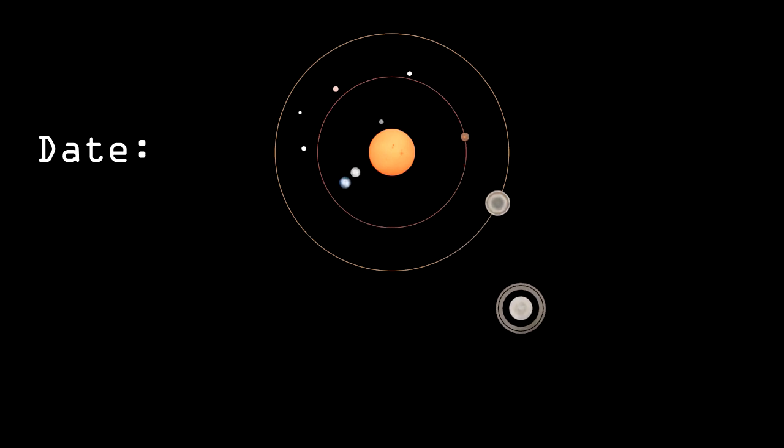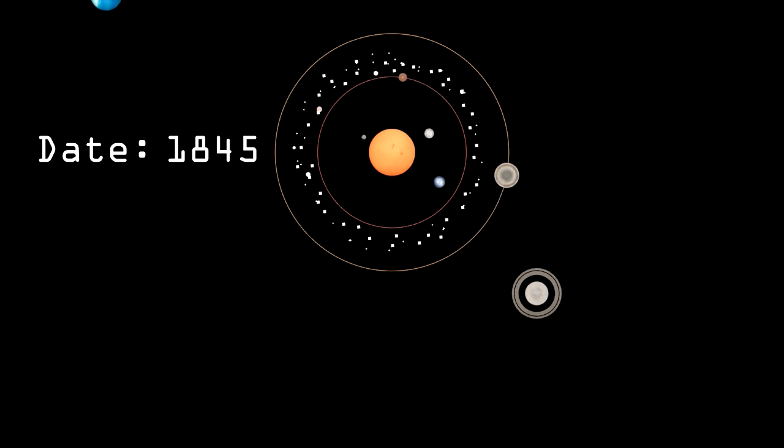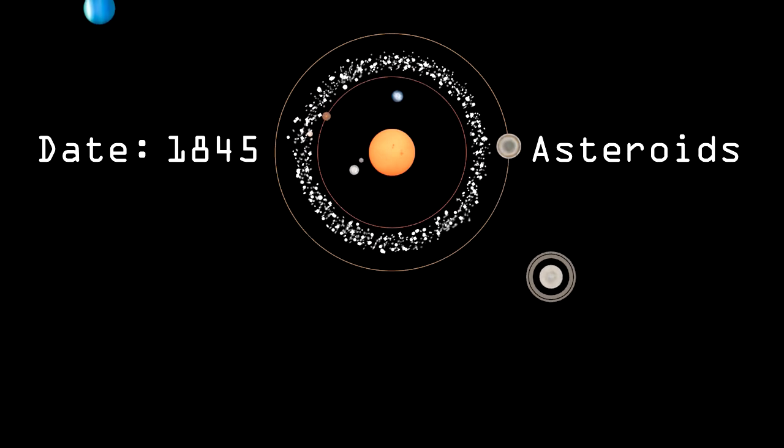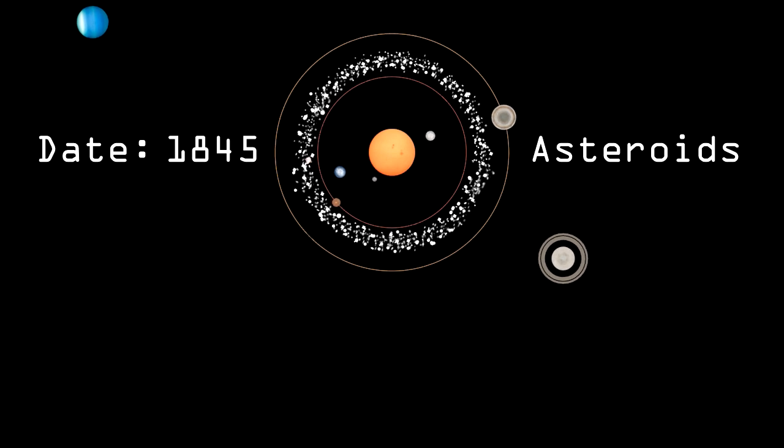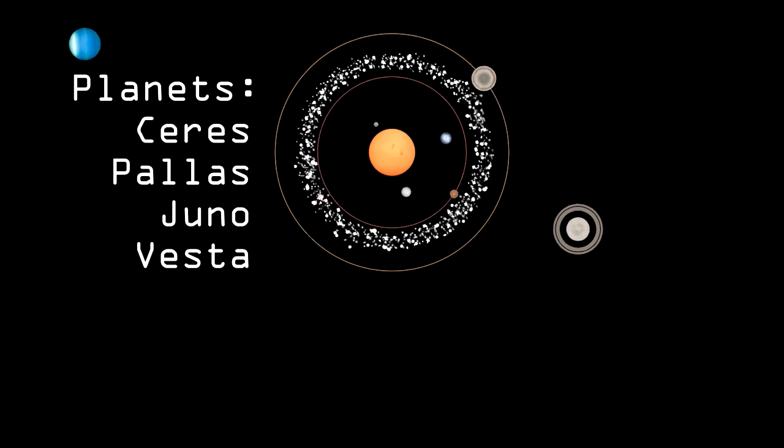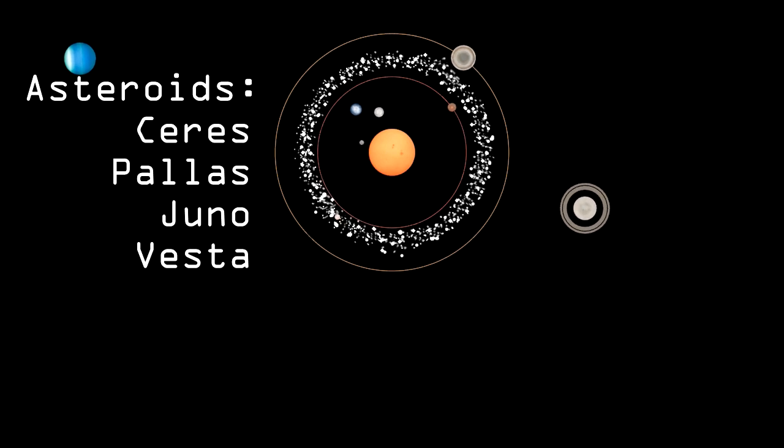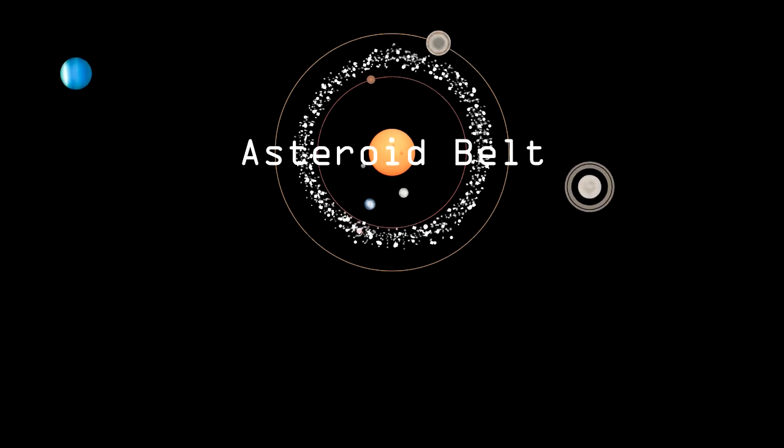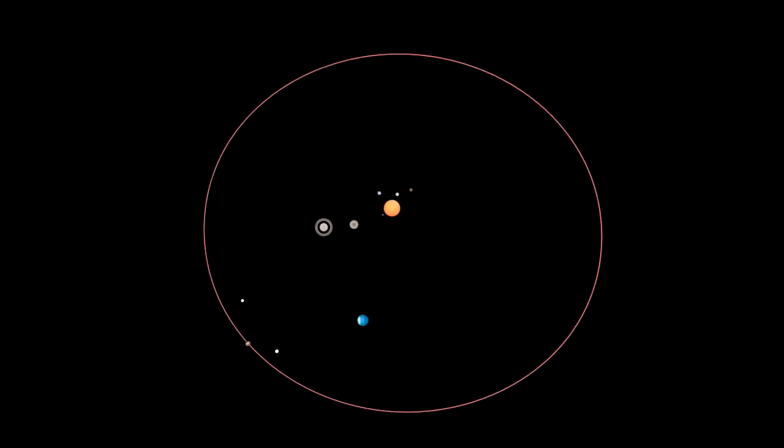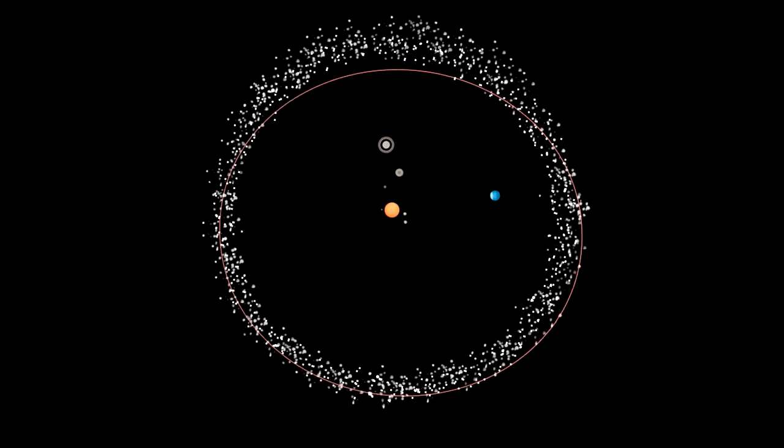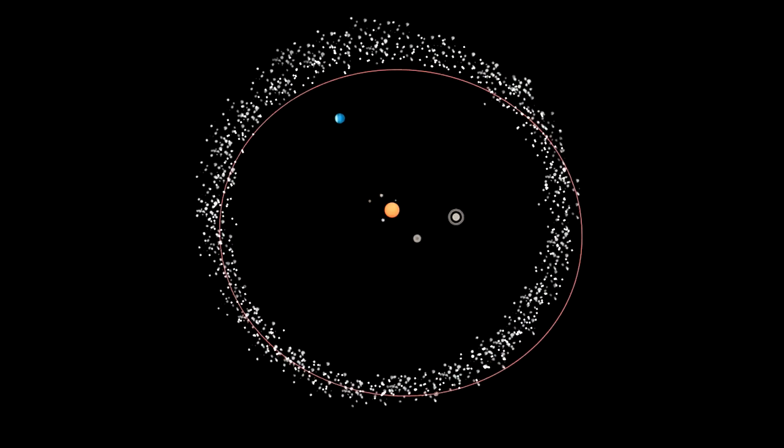But that changed with the discovery after 1845 of many more of what are now called asteroids, also orbiting between Mars and Jupiter. After that, Ceres and the rest were reclassified from planets to asteroids, in what is now called the Asteroid Belt. So, it was natural that many would question whether Pluto should still be called a planet, given that many more objects were found around its orbit.